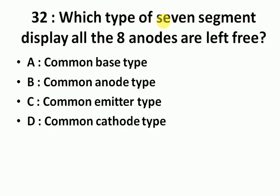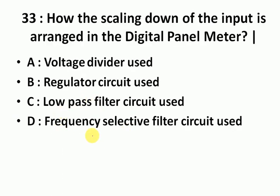Which type of 7-segment displays all the 8 anodes are left free? Answer is common cathode type. How the scaling down of the input is arranged in the digital panel meter? Answer is voltage divider used.